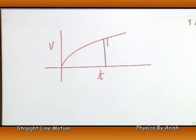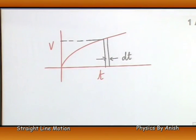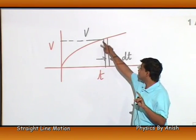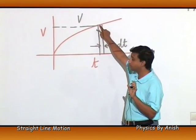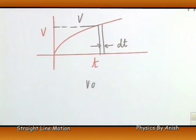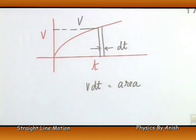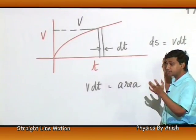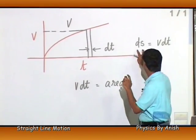We have taken a small strip. The time interval will be dt. This is the rectangle area — area = v into dt. This is a very small thickness, so the area will be v·dt. We also know that ds = v·dt, so the area of the strip gives us a small displacement.